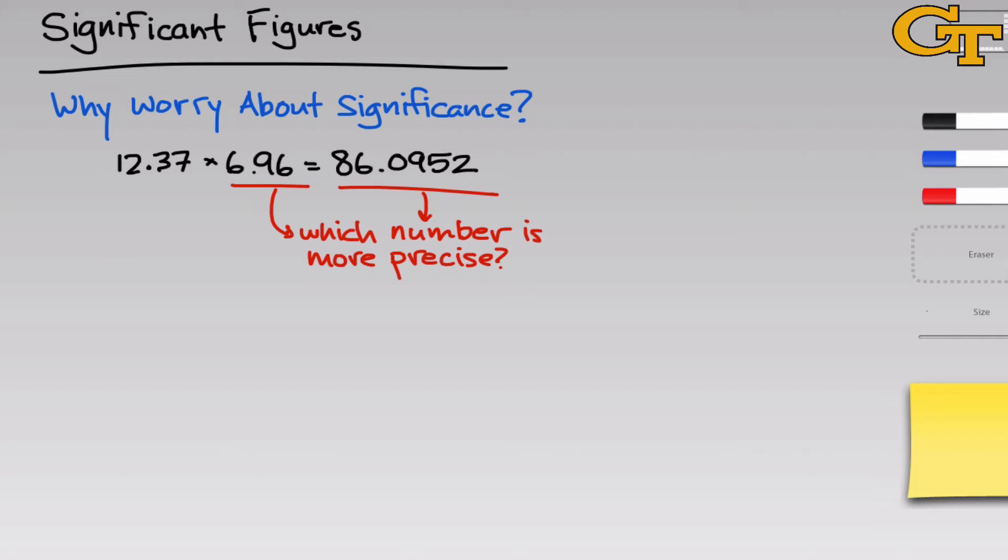Well, given the extra decimal places in the number on the right, we see that we have a number in the ten thousandths place, whereas we only have a number in the hundredths place in the 6.96. So we're getting a lot more precision out of the number on the right. There's an issue here. We're taking two numbers that have only two digits after the decimal and manufacturing a number that has four digits after the decimal simply by doing multiplication. We haven't measured anything to greater precision, but the results of the calculation look more precise than the numbers we started with.